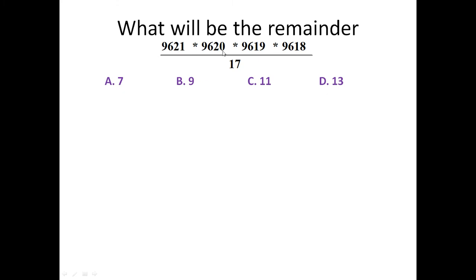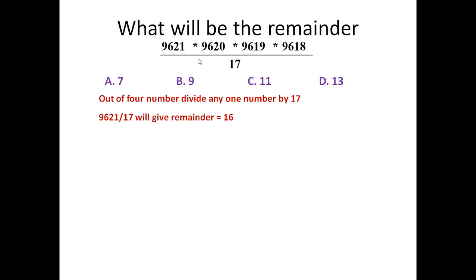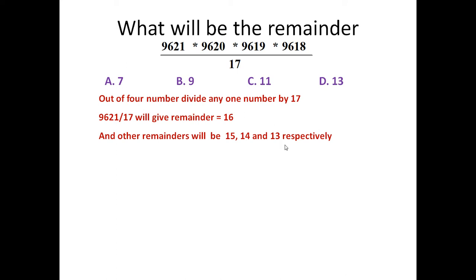Friends, if you see, these numbers are in decreasing order. So let us take only one number — 9621. If we divide this by 17, we will get the remainder 16. The next numbers are each less by 1, so their remainders when divided by 17 will be 15, 14, and 13 respectively. So we have divided only one number but we got the remainder for all four numbers. Now, our problem is reduced to 16 × 15 × 14 × 13 divided by 17.